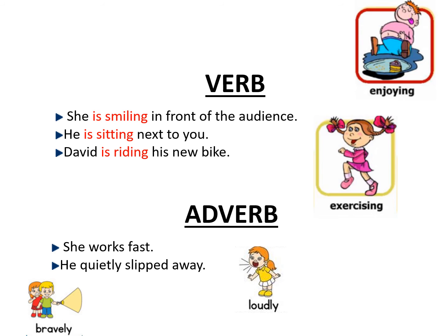Next are adverbs. Adverbs are basically words which describe verbs. For example, 'She works.' 'Works' is a verb here. 'She works fast.' What is the word describing the verb? Fast. How is she working? She is working fast. So 'works' is a verb and 'fast' is an adverb here. I hope this is clear.